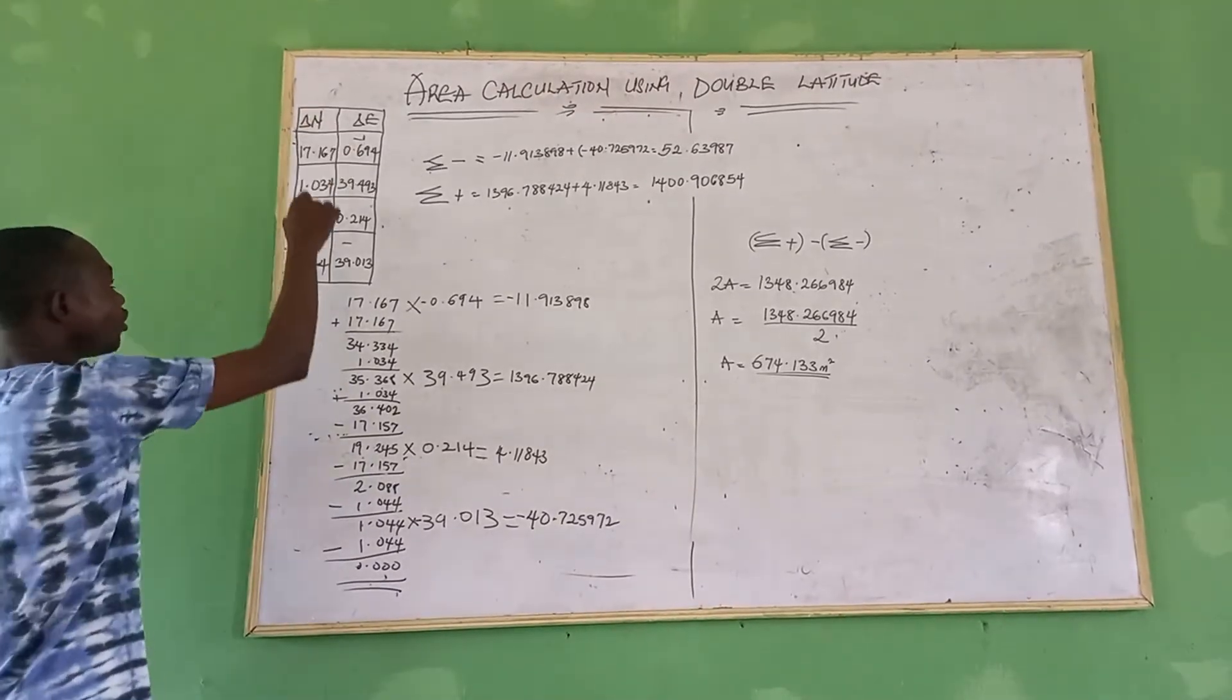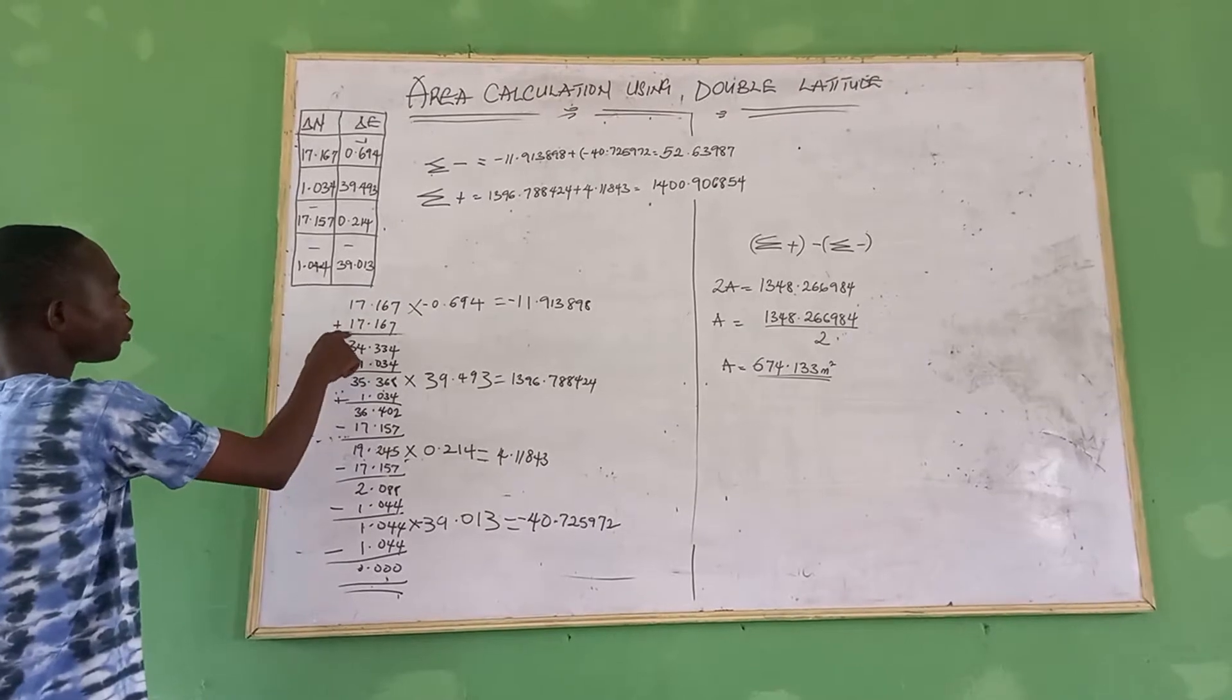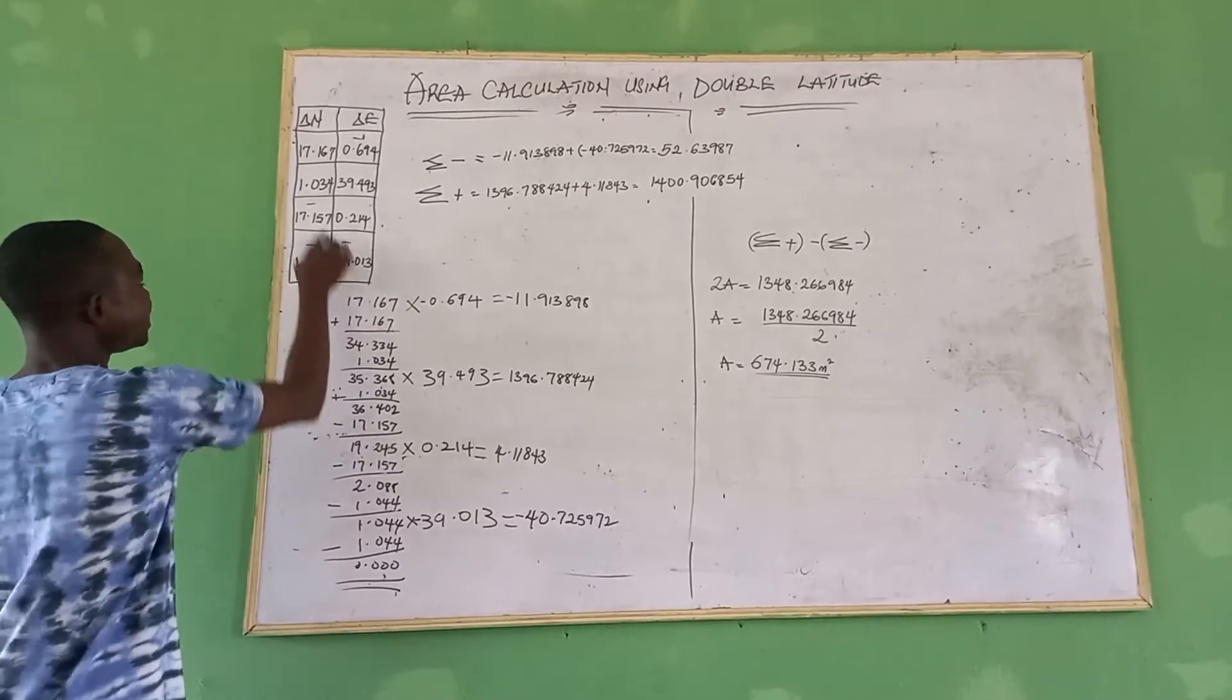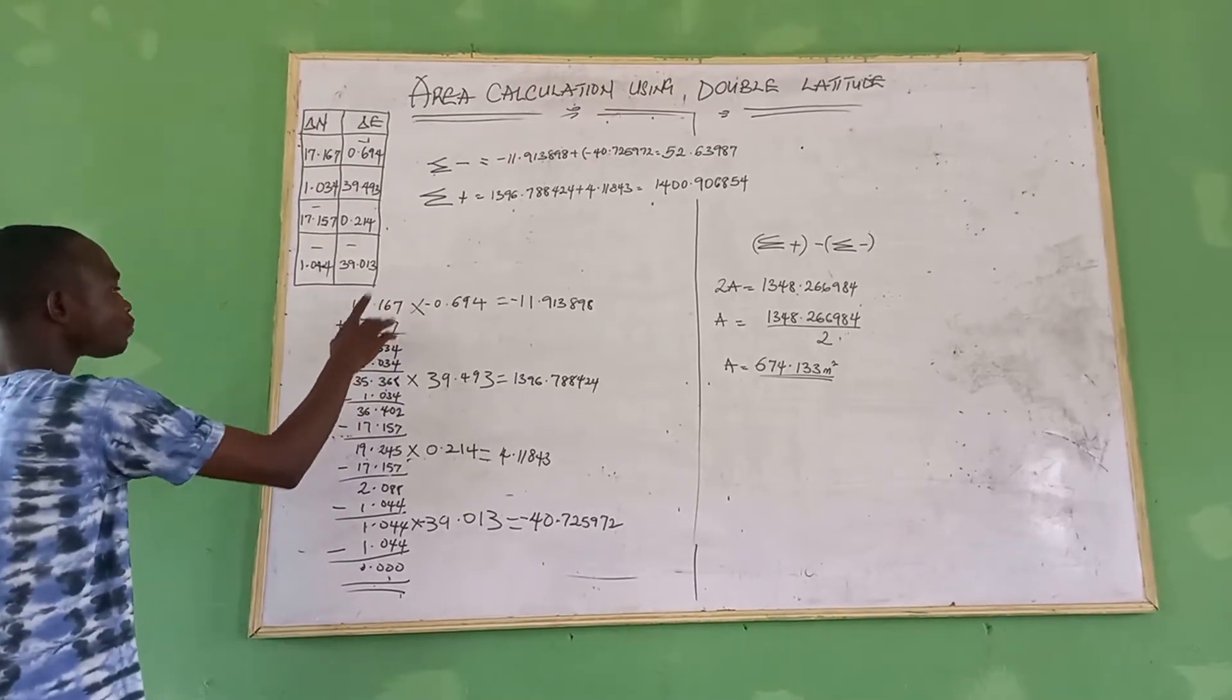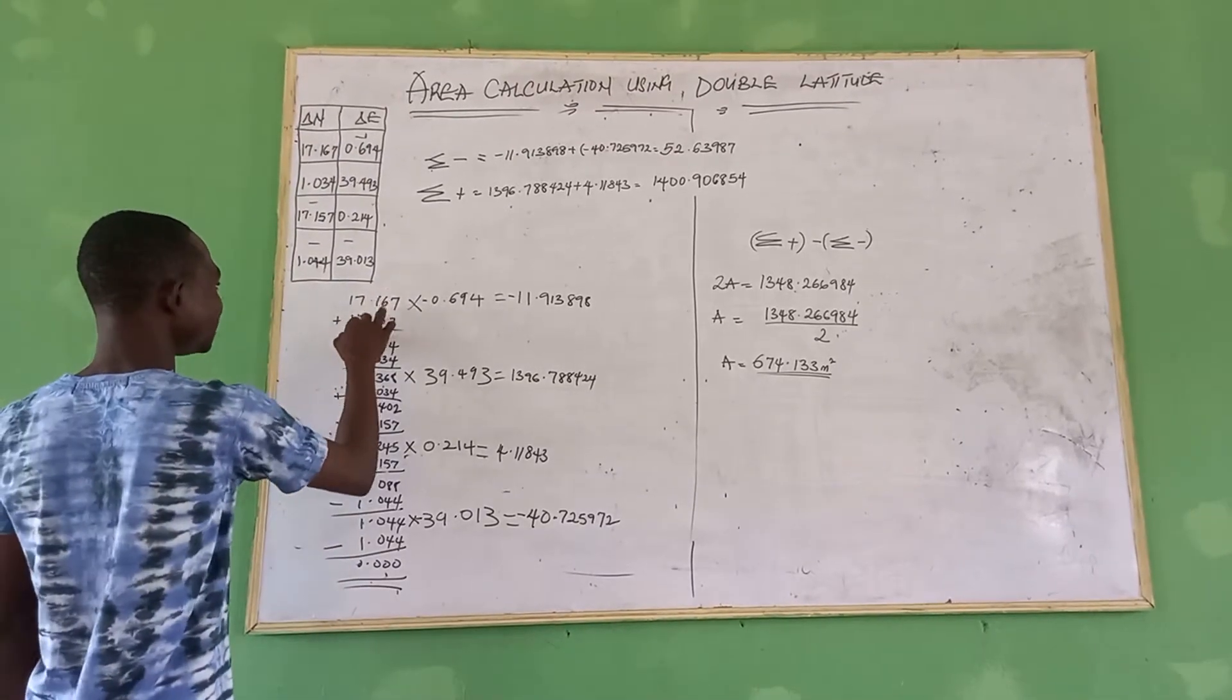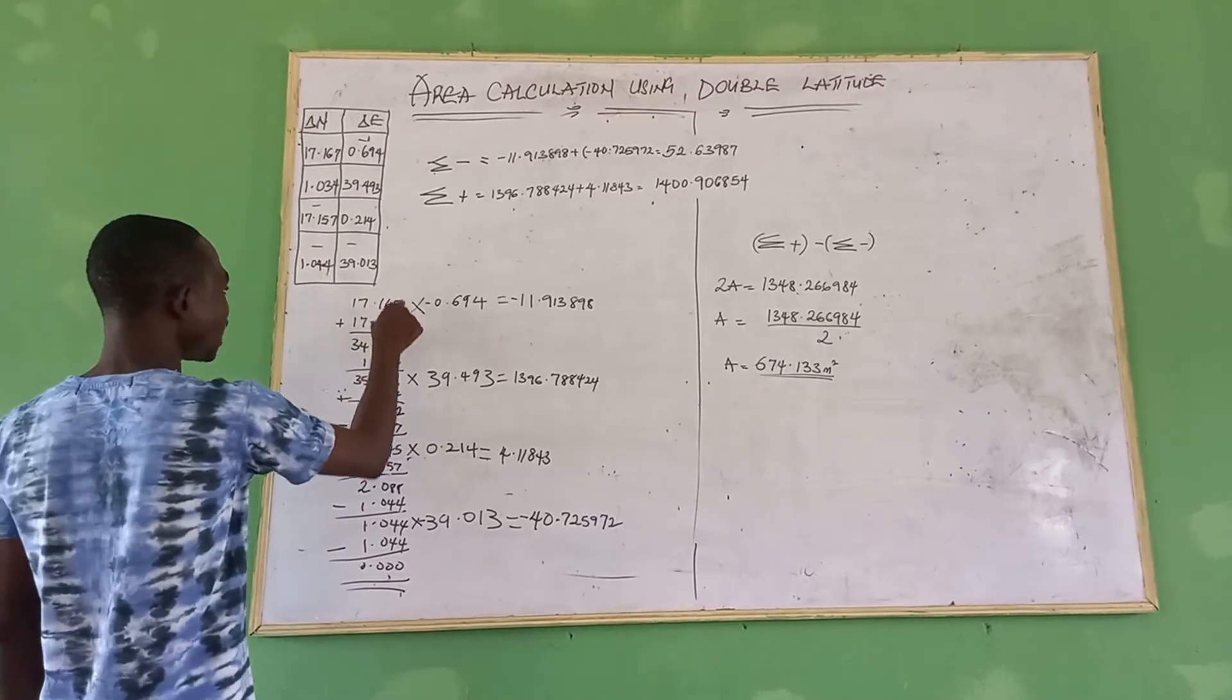Each value will be coming out two times. So what we have, this addition of these two will give us this. Since this one has appeared two times, so you come to the next box.